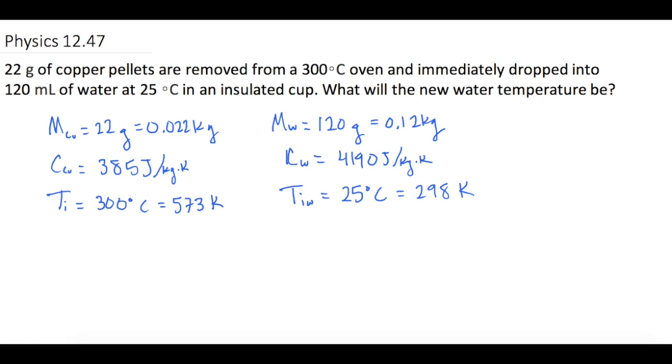Thinking about this question, we know that energy is going to be conserved, so whatever energy we start out with, we have to end up with. In other words, we could find q for copper and q for water, and whatever value we get for that has to equal the final q for copper and the final q for water.